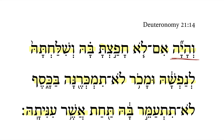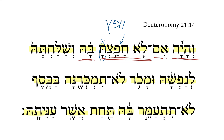And it shall come about if you do not take pleasure in her — if you do not delight in her. Here's a qal perfect, it's a 2ms; notice the ta ending. The verbal root is hafatz, meaning 'to delight.' If you do not delight in her.